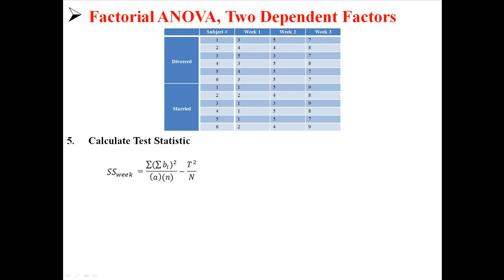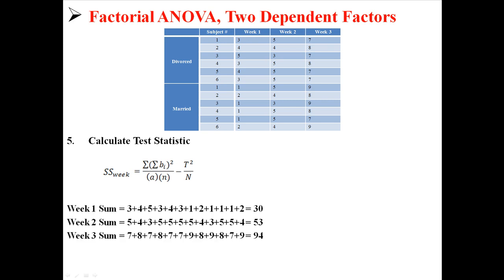Next we calculate SS for week, which is similar to marital status but we swap A and B. We find our week sums: week 1 is 30, week 2 is 53, week 3 is 93. So on top of the equation we have 30² + 53² + 94², divided by a×n (2×6), minus T²/N. Working that out, we find a sum of squares for week of 175.17.